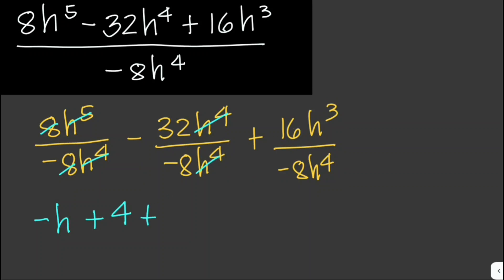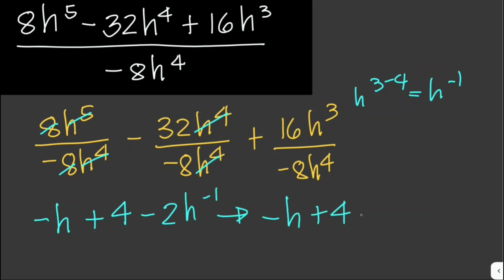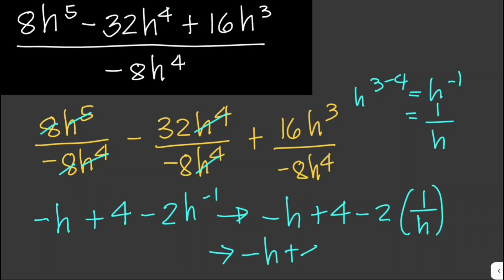16 divided by negative 8 is negative 2, and h³ divided by h⁴ is h to the negative 1. We can write h to the negative 1 as 1 over h, so negative 2 times 1 over h is negative 2 over h. Our final answer is negative h plus 4 minus 2 over h.